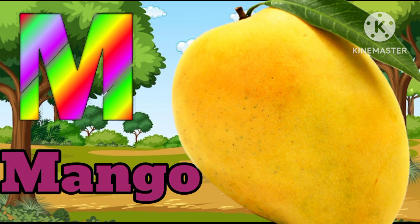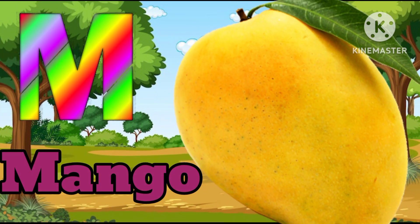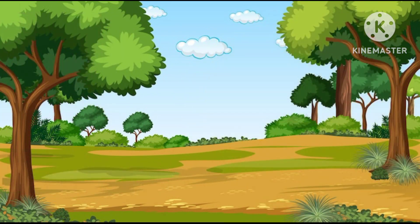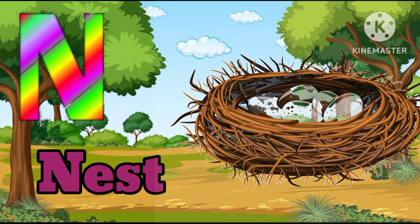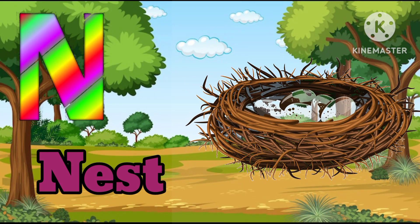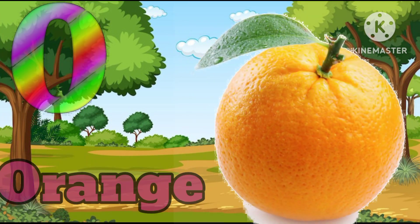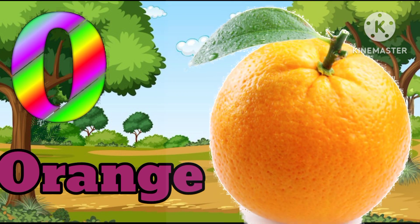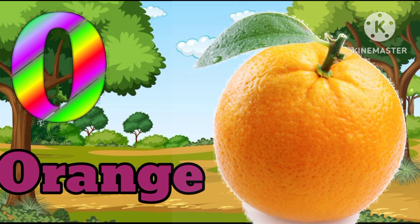M for mango. Mango means arm. N for nest. Nest means ghosla. O for orange. Orange means shantra.